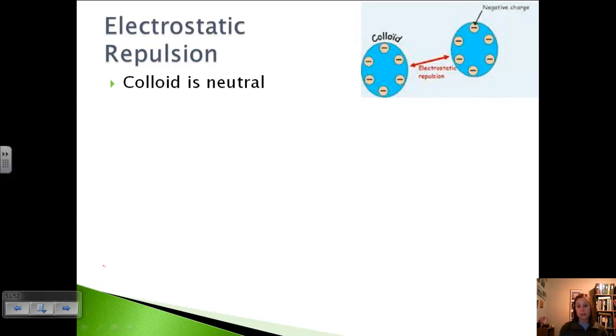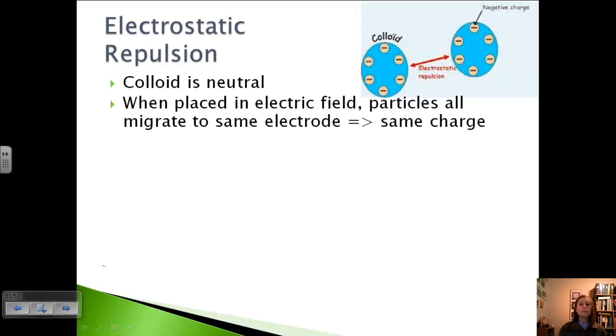Well, we can assume that they are neutral. However, when we put them in some sort of an electric field, the particles all migrate to the same electrode. So this tells us that they must all have the same charge. If you've got a positive electrode, we've got all the colloids going to it. Maybe they all have a negative charge. So this is telling us that they're charged in some way.